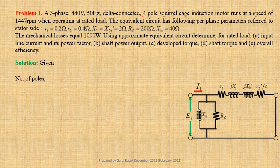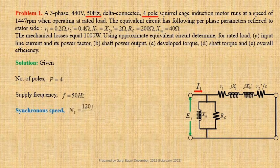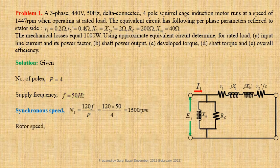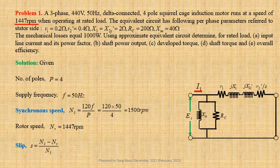Number of poles of the machine P = 4, and supply frequency F = 50 Hz. Let us now calculate synchronous speed: Ns = 120F / P = 120 × 50 / 4 = 1500 RPM. Given rotor speed Nr = 1447 RPM. Now we shall determine slip: S = (Ns − Nr) / Ns = (1500 − 1447) / 1500 = 0.03533 per unit.